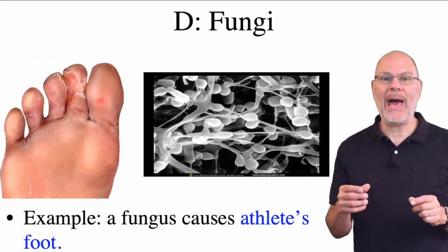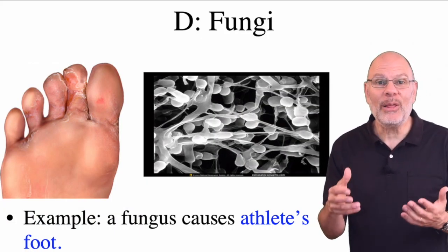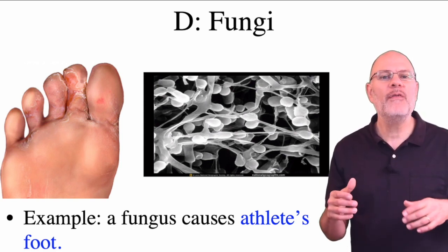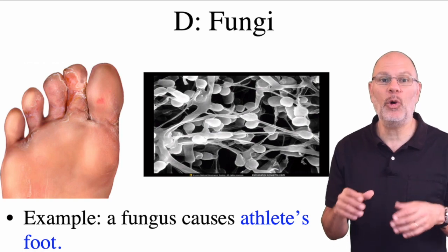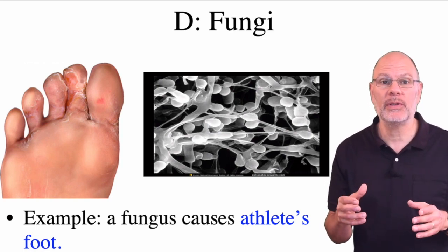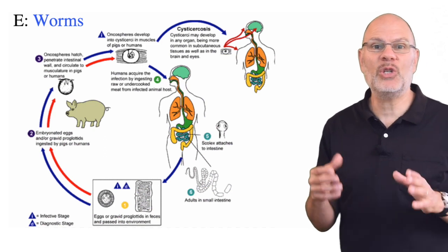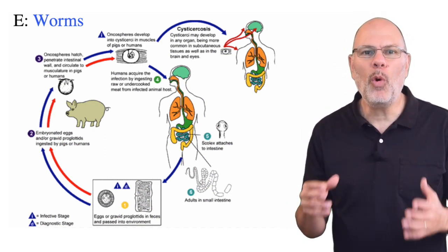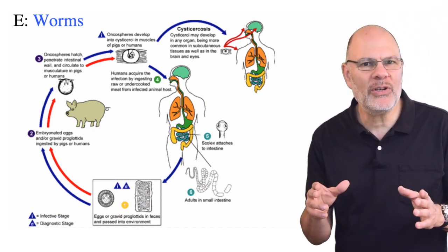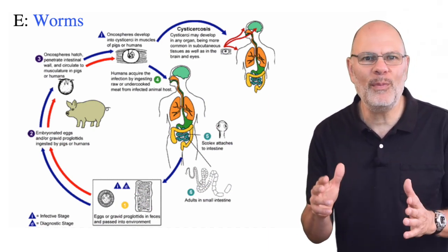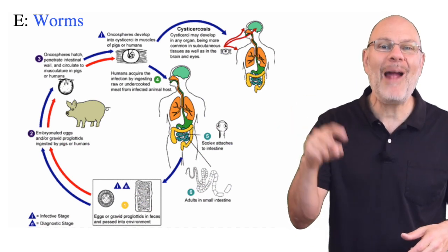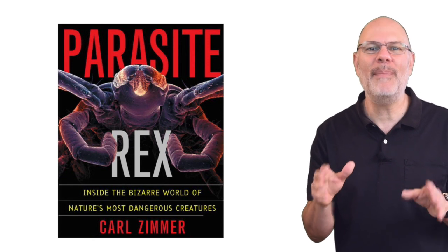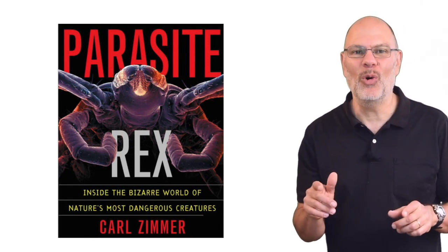Fungi are our fourth class of pathogens. If you've ever had athlete's foot or a yeast infection, you've been infected by a pathogenic fungus. Fungi can become deadly in people who have compromised immune systems. Finally, you can be infected by other animals such as parasitic worms. Here's a diagram of the life cycle of the pork tapeworm. What's amazing is that these parasitic life cycles are far from unusual — there are more parasitic animals than non-parasitic animals. You should read Carl Zimmer's amazing book, Parasite Rex, if you want to learn more.